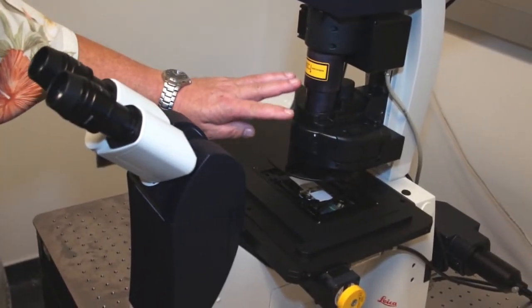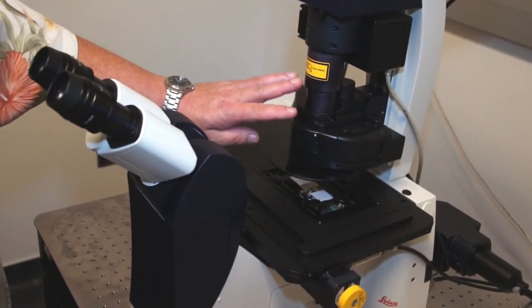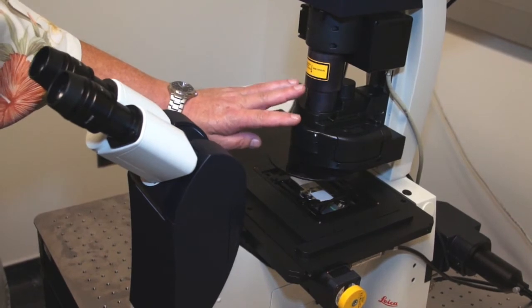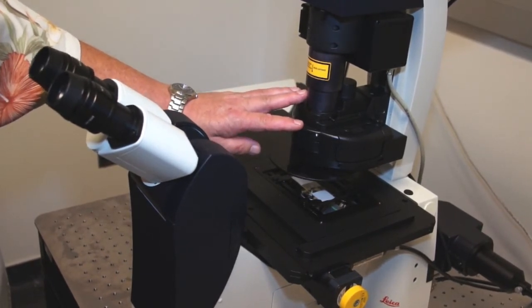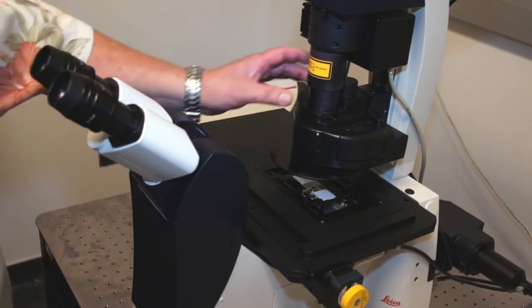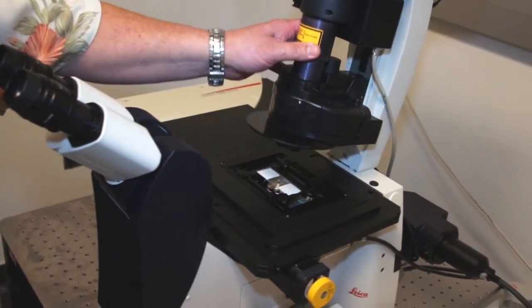As mentioned previously, we have a combination of wet objectives and dry objectives on the Leica Confocal Microscope. In order to go from a dry objective to a wet objective, we must first rock the condenser out of the way.